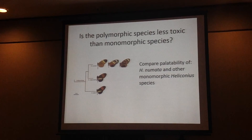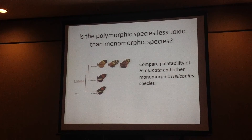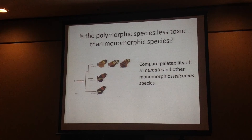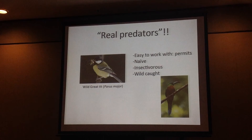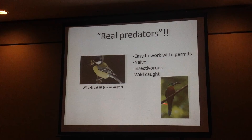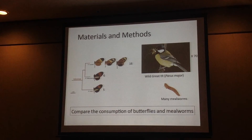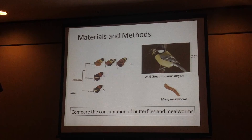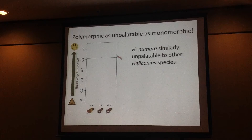What I wanted to see is if the polymorphism in Heliconius numata is indeed associated with lower toxicity. We compared Heliconius numata with other Heliconius species that are monomorphic within locality, using experiments with real predators. Unfortunately not with birds from the tropics, but we used great tits — they are easy to work with, naive to those butterflies, insectivorous, and wild. We compared the consumption of the butterflies and the mealworms, which is one of the favorite foods of great tits, especially in winter when we performed experiments.